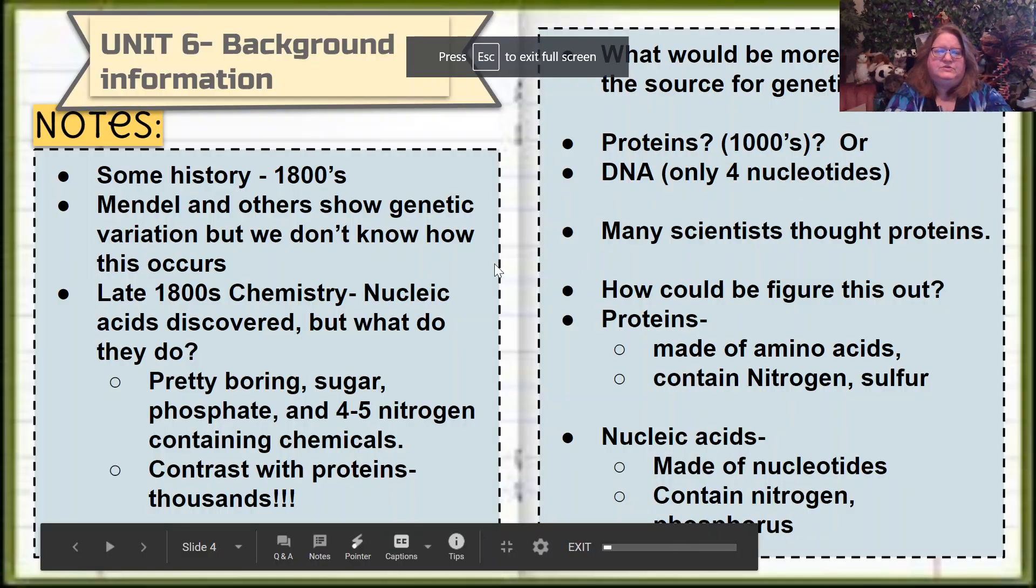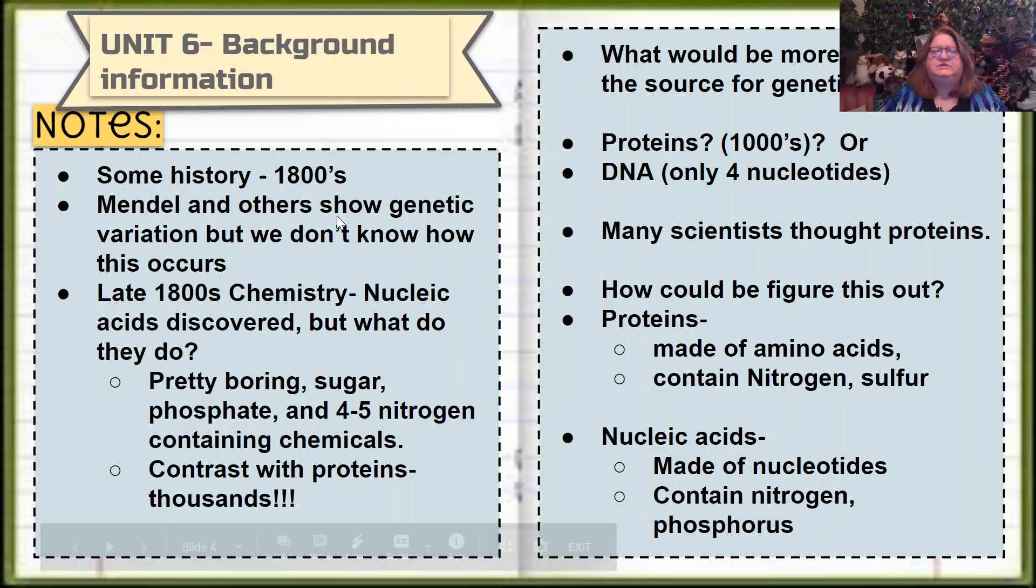We're going to dive in first with some background information that's going to be super helpful to understand the importance of DNA and RNA and how we came to this monumental discovery. In the 1800s, as our story unfolds, we knew from Mendel's work in the middle 1800s that animals and plants show genetic variation, but we didn't know how it occurs. Mendel only knew that there was a factor that was being passed down. In the late 1800s, we discovered nucleic acids. We knew that there was this group of molecules, and they called them nucleic acids, but we didn't really know what they did. In fact,